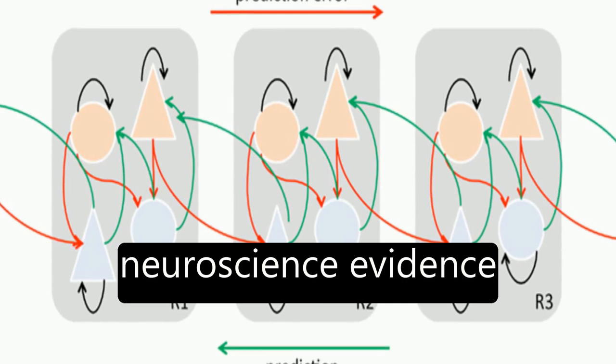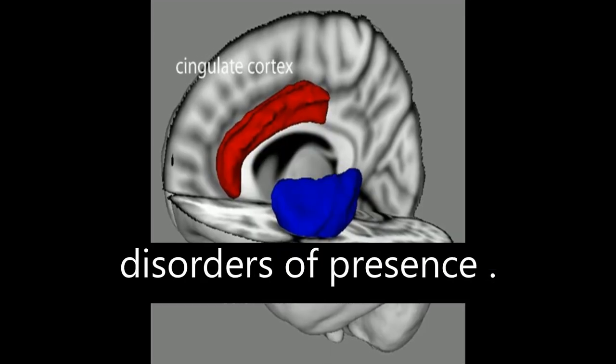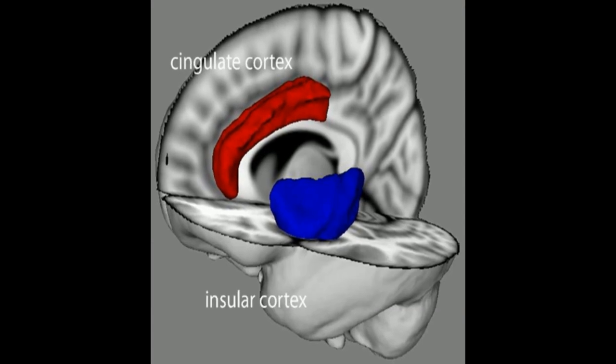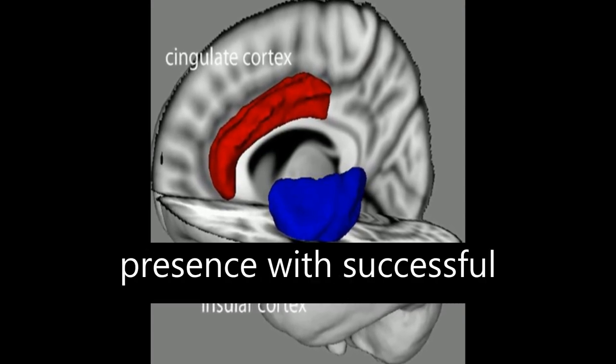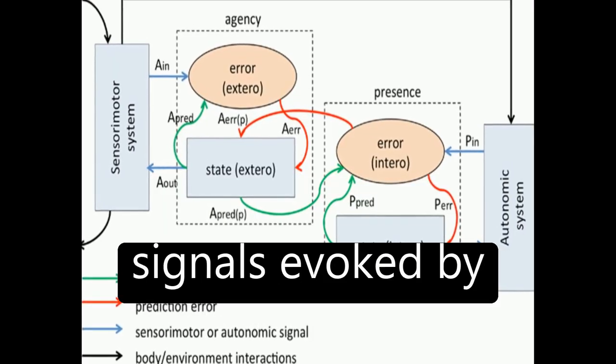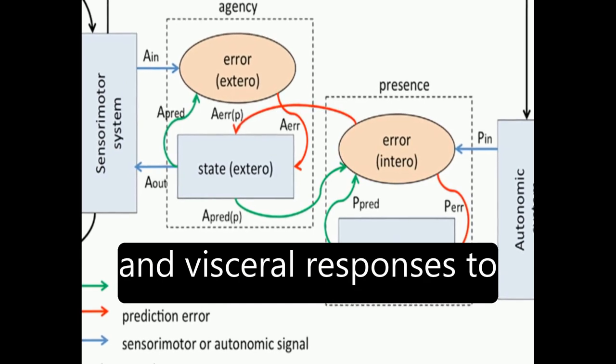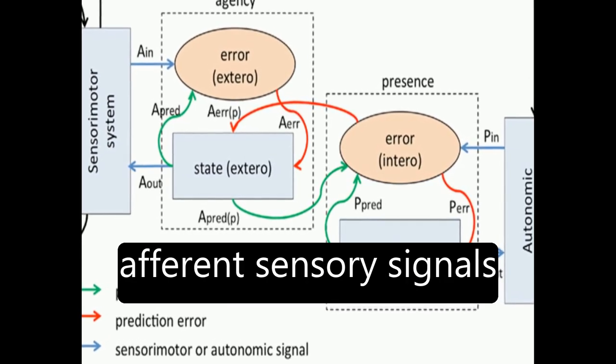The model includes cognitive neuroscience evidence from studies of virtual reality and psychiatric disorders of presence. The model associates presence with successful top-down predictions of informative interoceptive signals, evoked by autonomic control signals and visceral responses to afferent sensory signals.